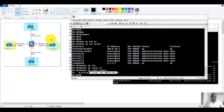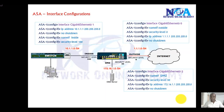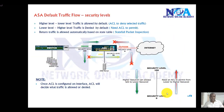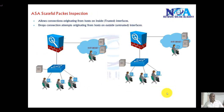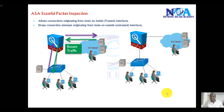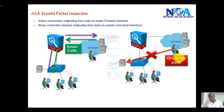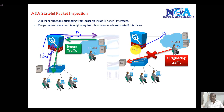By default, the ASA performs stateful packet inspection, which we discussed in the basic topics. Stateful packet inspection allows traffic to pass through the ASA firewall if it is permitted and ensures that return traffic automatically comes back. However, any traffic originating from the outside interface — from the internet — is denied by default due to the default security levels. Traffic going from security level 100 to 0 is allowed, and return traffic comes back, but traffic from 0 to 100 is not allowed by default unless you write ACLs to permit it.